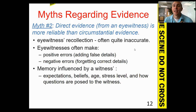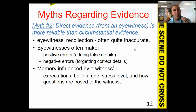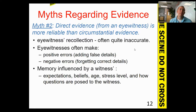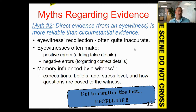Another common myth is that direct evidence — meaning someone seeing a crime take place — is more reliable than physical evidence. Eyewitness testimony is actually one of the weakest forms of evidence because of how malleable human memory is. Many cases decided purely on eyewitness testimony have led to miscarriages of justice. Not to mention, people can lie — they might have motivations to protect someone, and it's entirely possible that people lie even under oath.